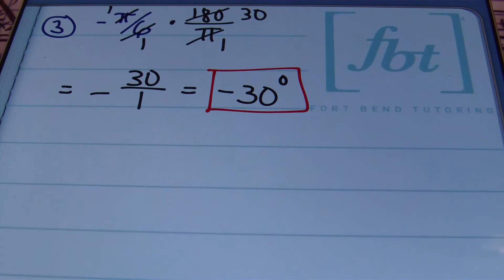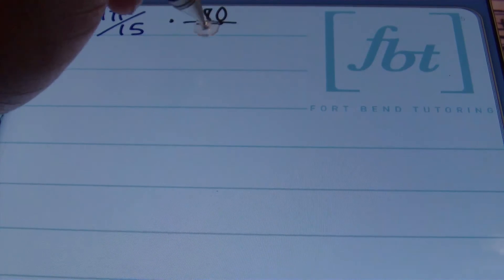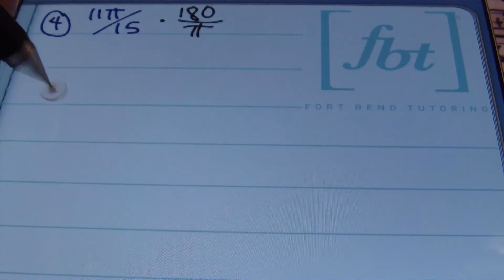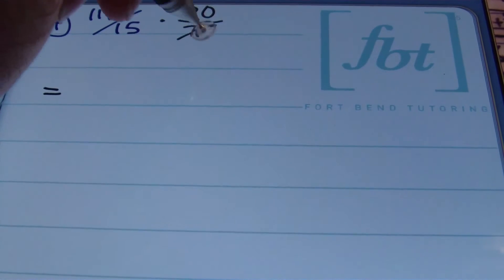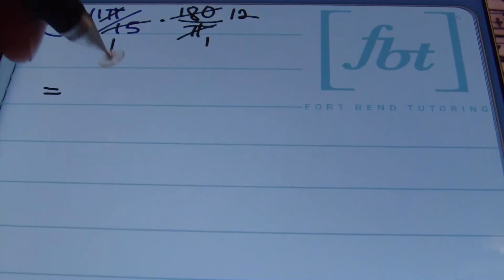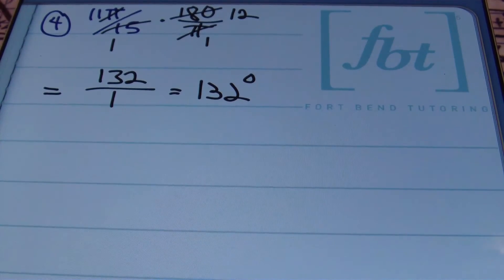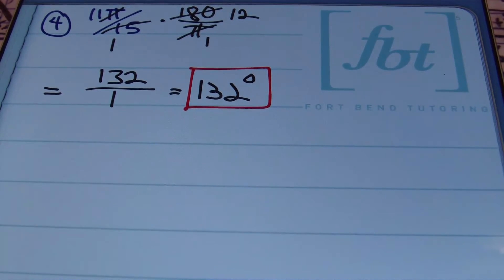Keep in mind that a negative radian measure gives a negative degree result. In problem number 4, we have 11π/15. Multiplying by 180/π: the π's cancel, and 15 goes into 180 twelve times. Multiplying straight across: 11 times 12 is 132, and the denominator is 1. So 11π/15 radians equals 132 degrees.